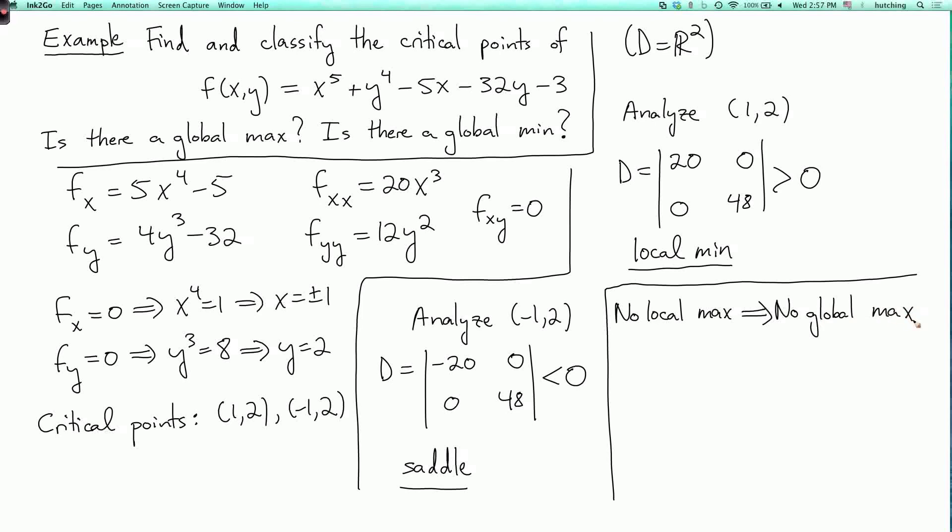Now what about a global minimum? We have a local minimum at 1 comma 2. If there's any global minimum, it has to be this point. But is this point a global minimum of the function?